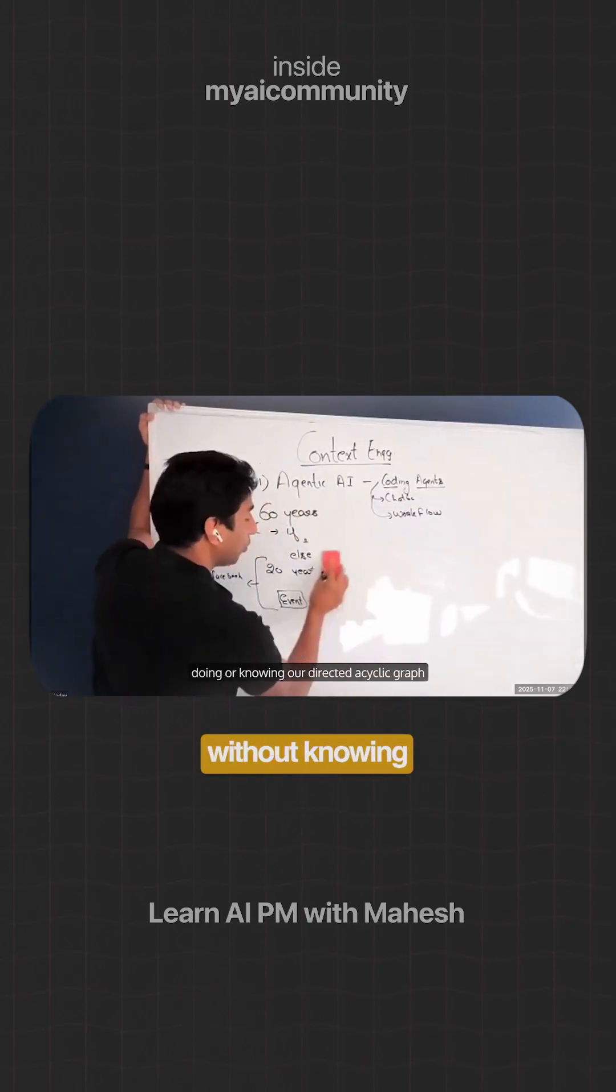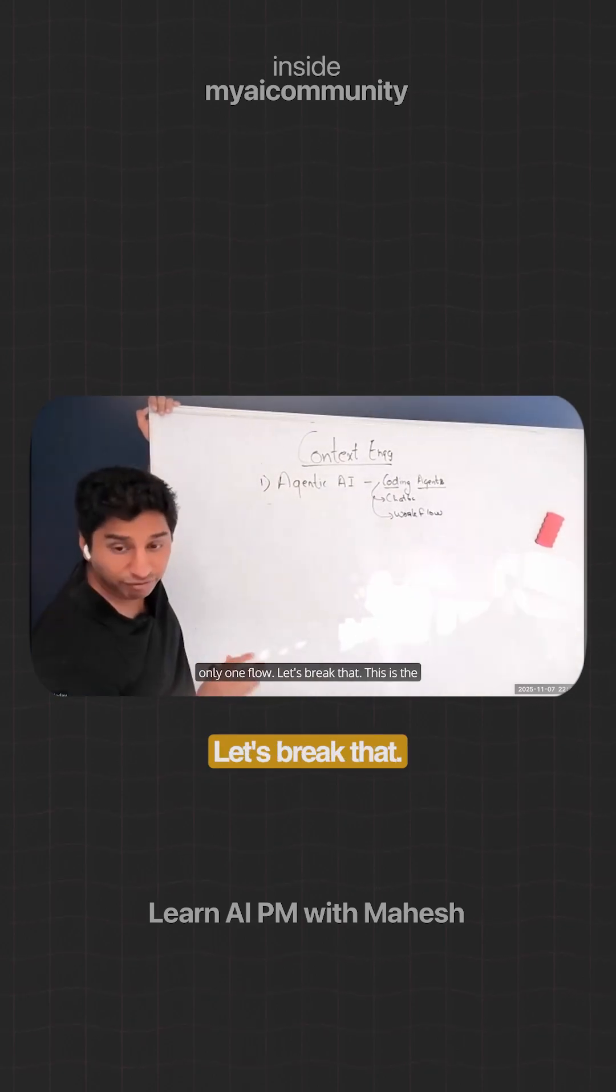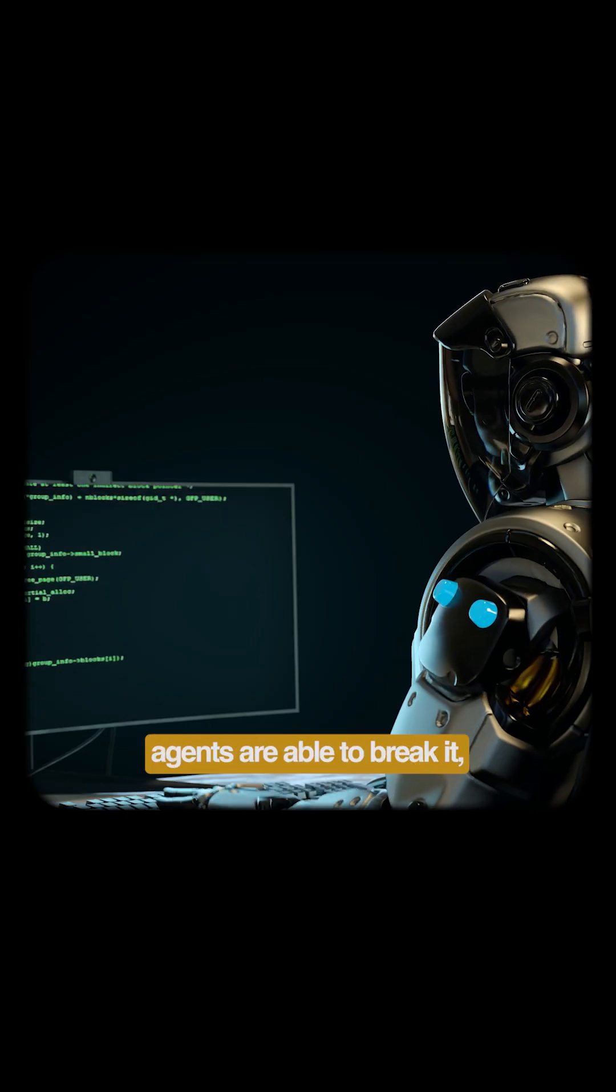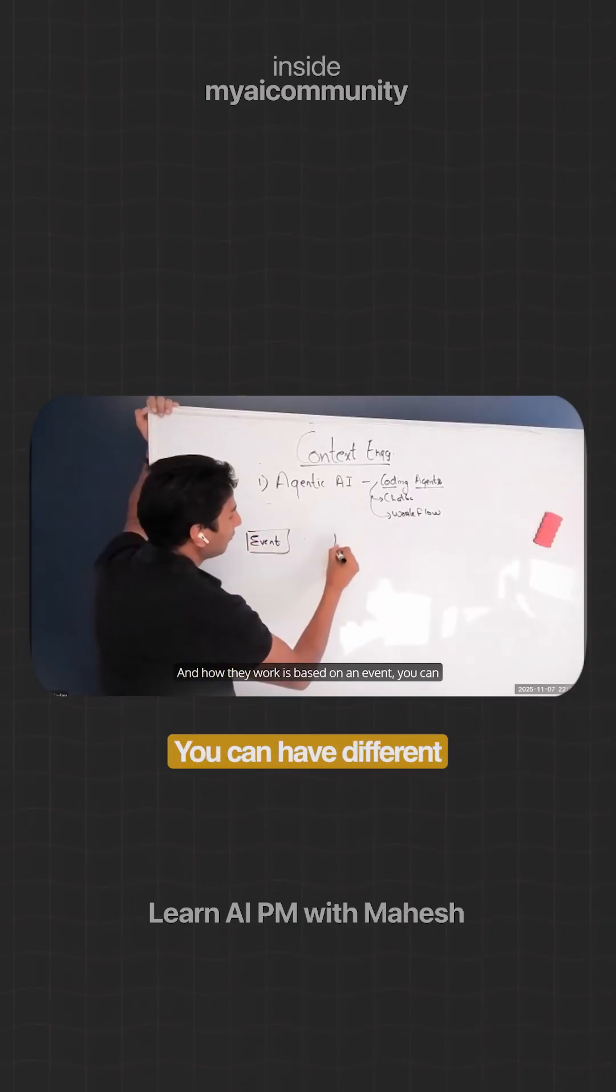Let's break that. This is the first time these coding agents are able to break it. And how they work is based on an event - you can have different blocks of code or different things that you can do.